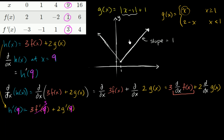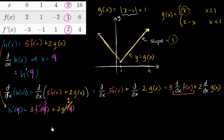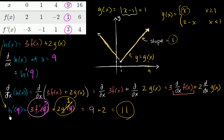So what does h prime of 9 evaluate to? It's 3 times f prime of 9 plus 2 times g prime of 9, which is 3 times 3 plus 2 times 1. That's 9 plus 2, which equals 11. So the slope of the tangent line of h when x equals 9 is 11.